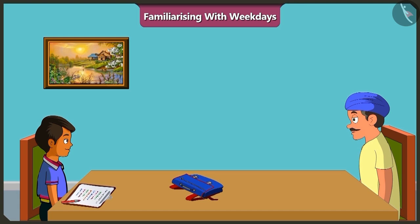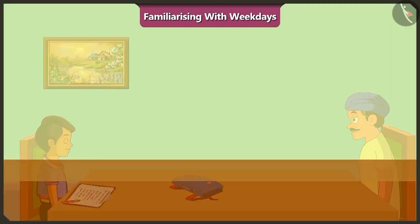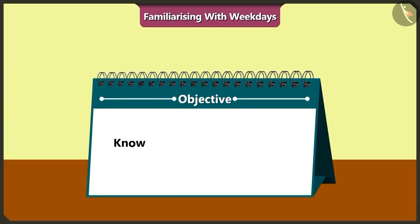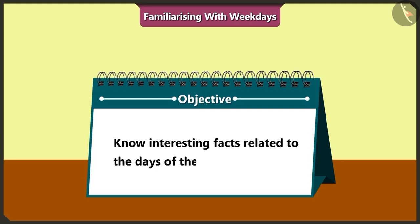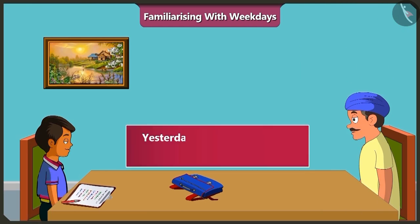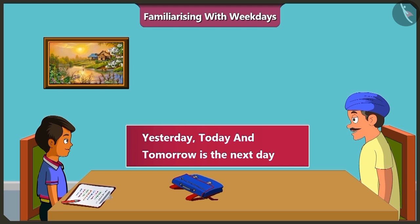Let me explain. Friends, today in this video we will learn some interesting facts related to the days of the week. The past day — yesterday — and today, and the coming day — tomorrow — are not one of the days of the week. They are used to indicate the days of the week.